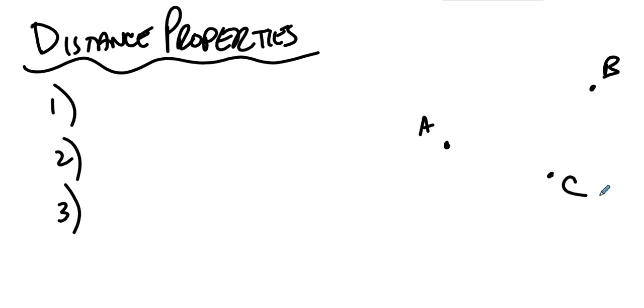We know that the distance from A to B, remember, if we don't put the line on top, that's a number. The distance from A to B, this number has to be non-negative. It is greater than or equal to zero. This distance is not negative. It is some positive number or perhaps zero, and it's only zero if A and B are the same point.